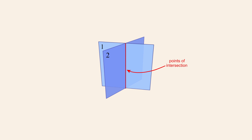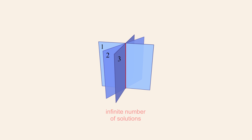A second possibility is that two of the planes are not parallel, and so their points of intersection form a line. If the third plane intersects the other two along this same line, then the common points of intersection for all three planes are represented by that line. The system will therefore have an infinite number of solutions corresponding to every point on the line.